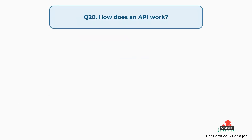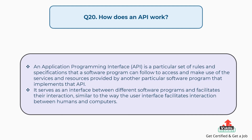Question number twenty: How does an API work? An application programming interface (API) is a particular set of rules and specifications that a software program can follow to access and make use of the services and resources provided by another software program that implements that API. It serves as an interface between different software programs and facilitates their interaction, similar to the way the user interface facilitates interaction between humans and computers.